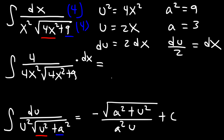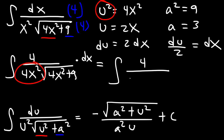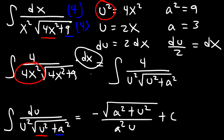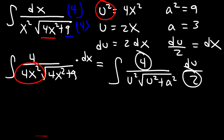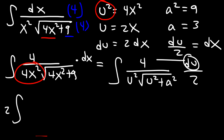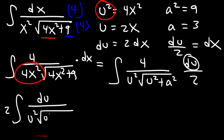Now we can replace 4x squared with u squared and 9 with a squared. We have 4 on top, and on the bottom u squared times the square root of u squared plus a squared. Don't forget this crucial step: replace dx with du over 2. So we get 2 times the integral of du divided by u squared times the square root of u squared plus a squared.